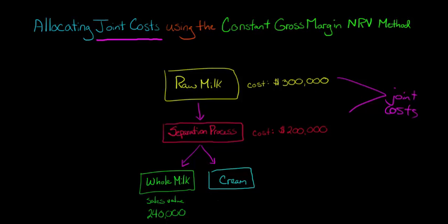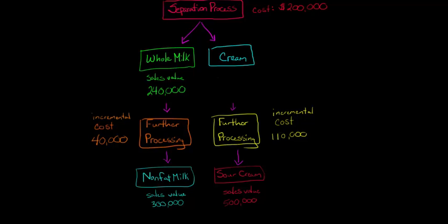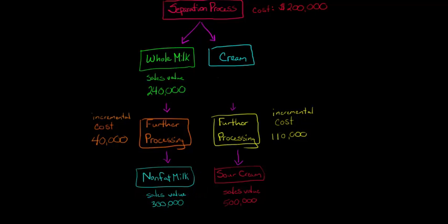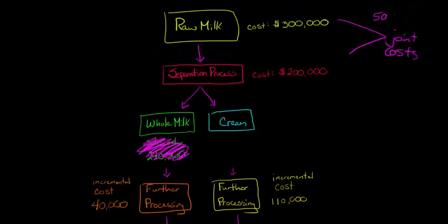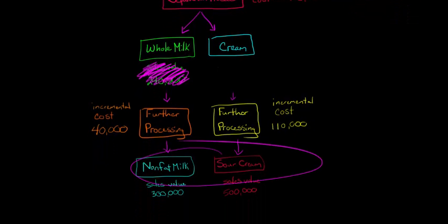We produce whole milk and cream, but we don't know the sales value at the split-off point of the cream, although the sales value at split-off of the whole milk is $240,000. We're actually going to process these products further — both of them. We're going to process whole milk into nonfat milk and then the cream into sour cream. We'll ignore the sales value at the split-off point of the whole milk and process all the way through. Of that $500,000 in joint costs, we need to allocate those among the nonfat milk and the sour cream.